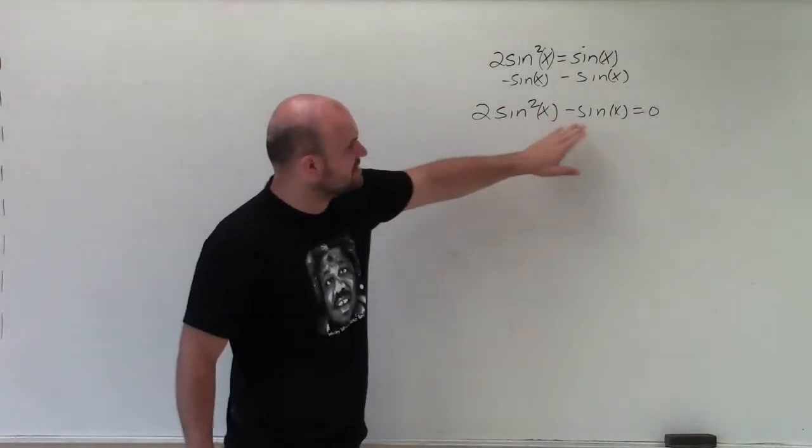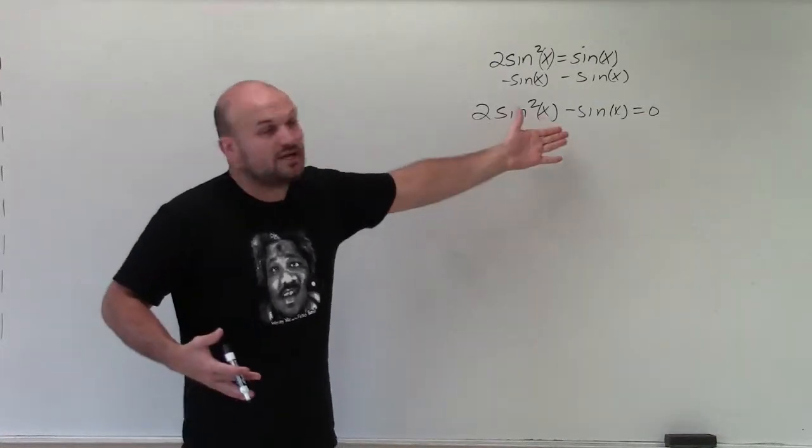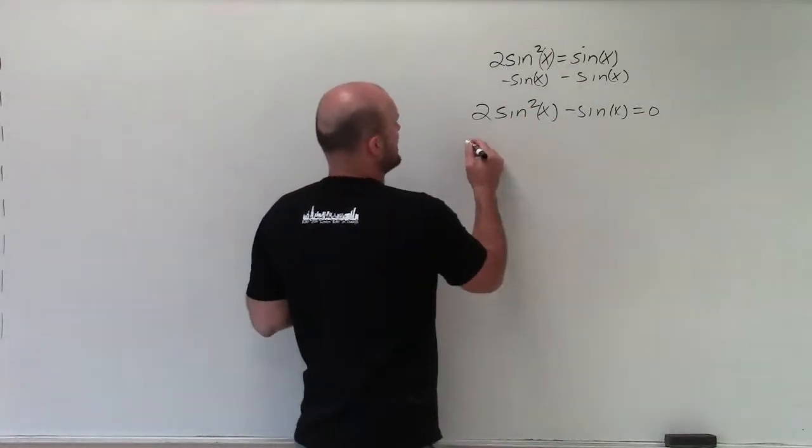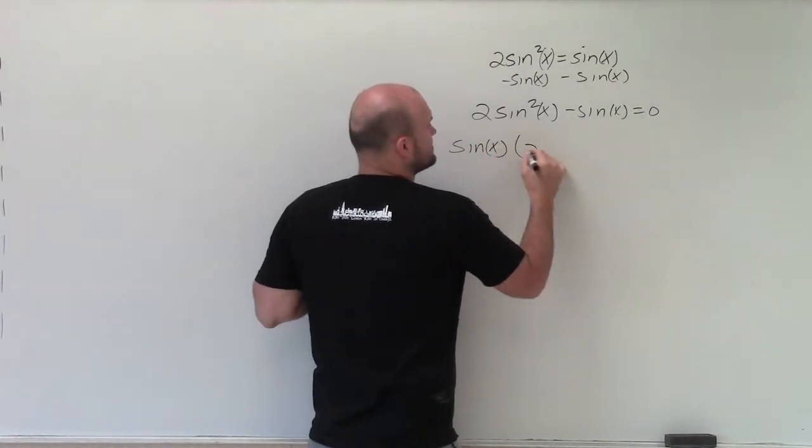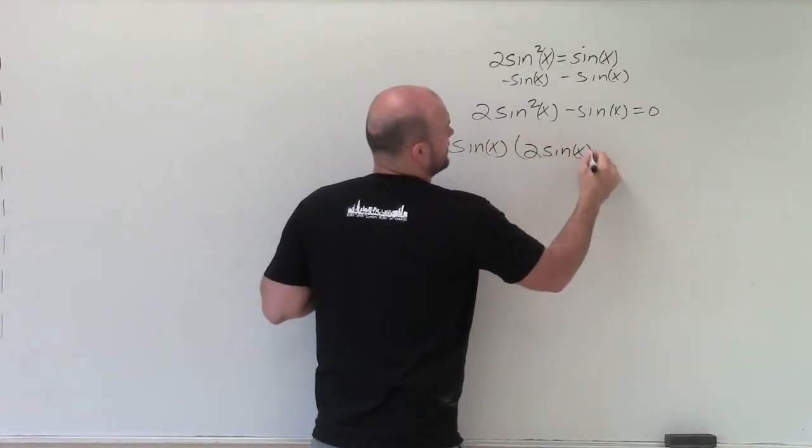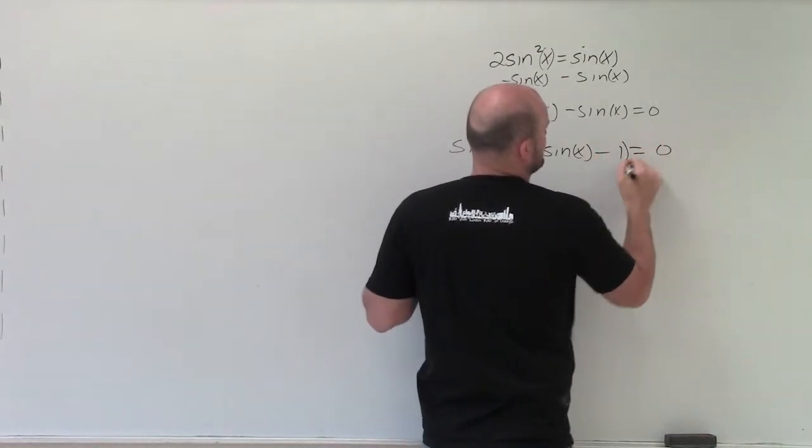So what I'm going to want to do is see if I can apply any type of factoring. And I notice that since I can't combine them, but I can factor out a sine. They do share a sine of x. So that's exactly what I'm going to do. I'm going to factor out a sine of x times 2 sine of x minus 1 equals 0.